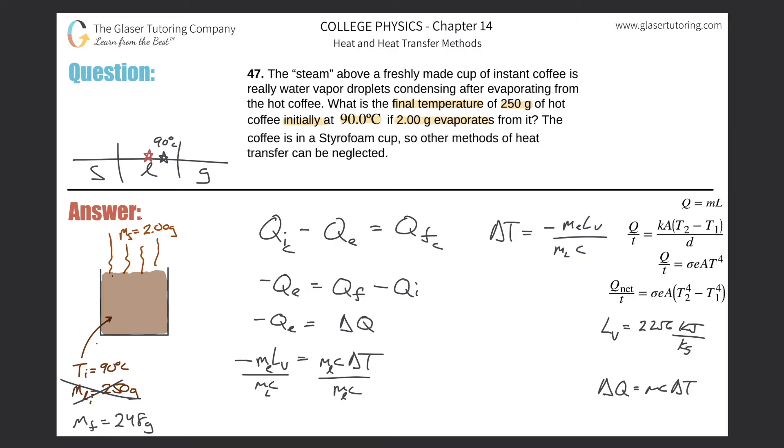Delta T will be negative—converted into kilograms, 0.002 kg evaporated. Latent heat of vaporization of water, convert that into joules, multiply by 1000, then divide by the mass remaining, 248 divided by 1000, which is 0.248 kg, then multiply by the specific heat of water in the liquid state, about 4184. Calculate: negative 0.002 times 225600 divided by 0.248 times 4184.